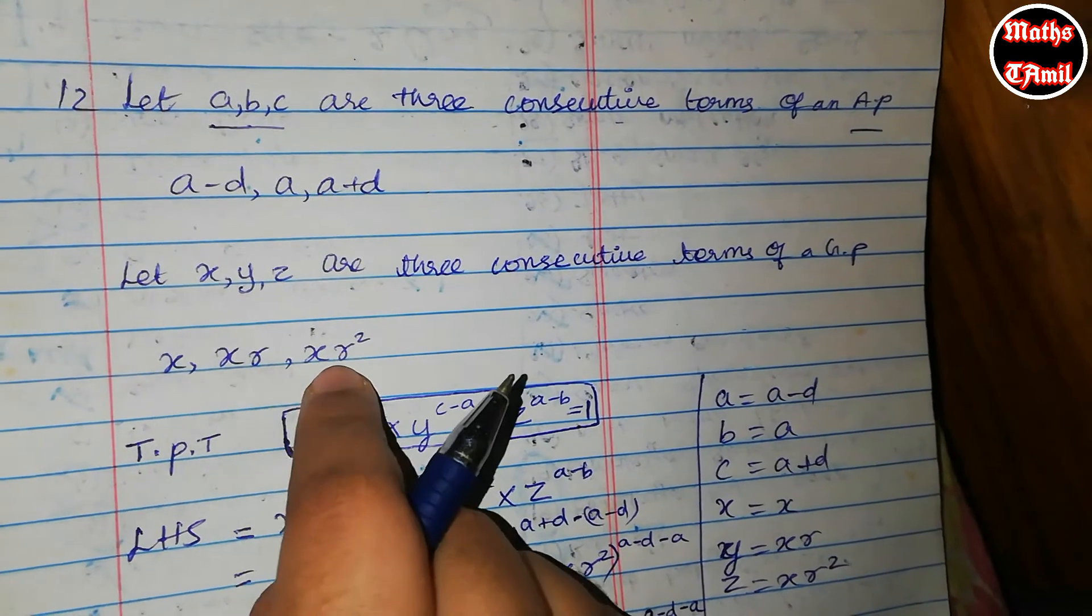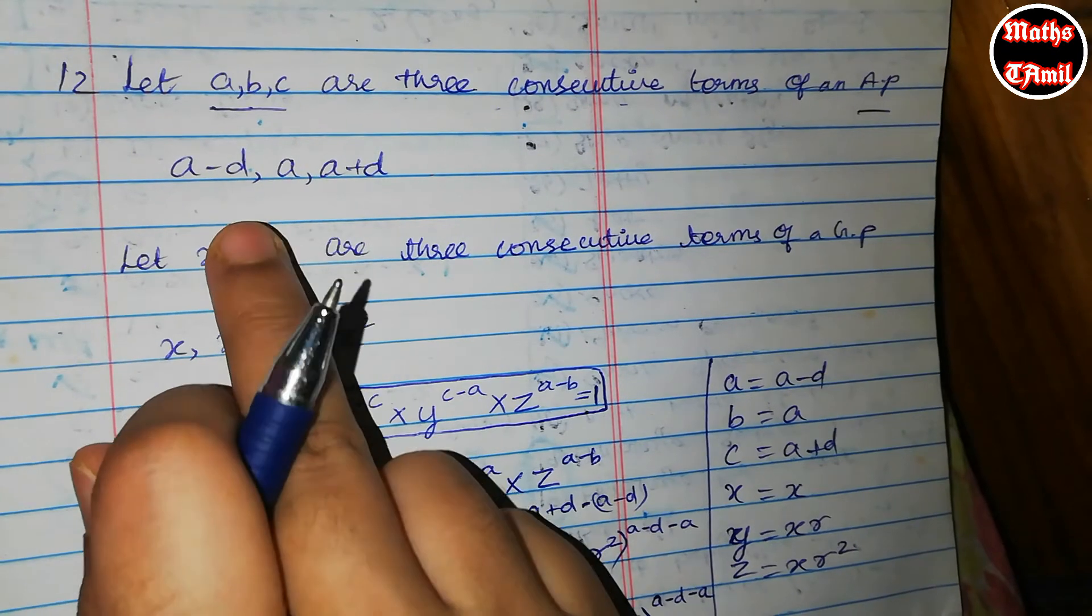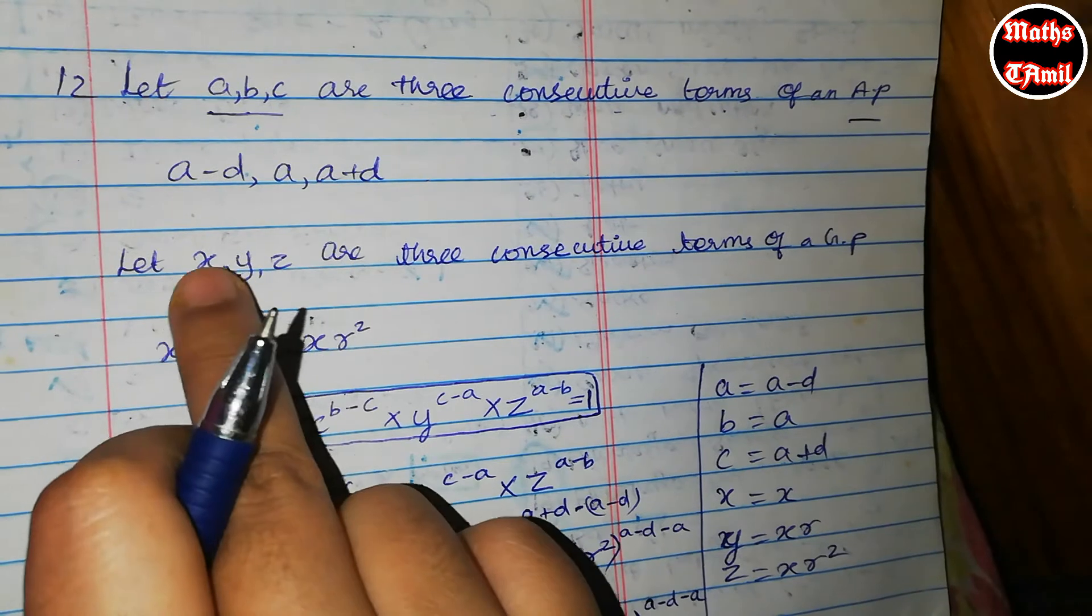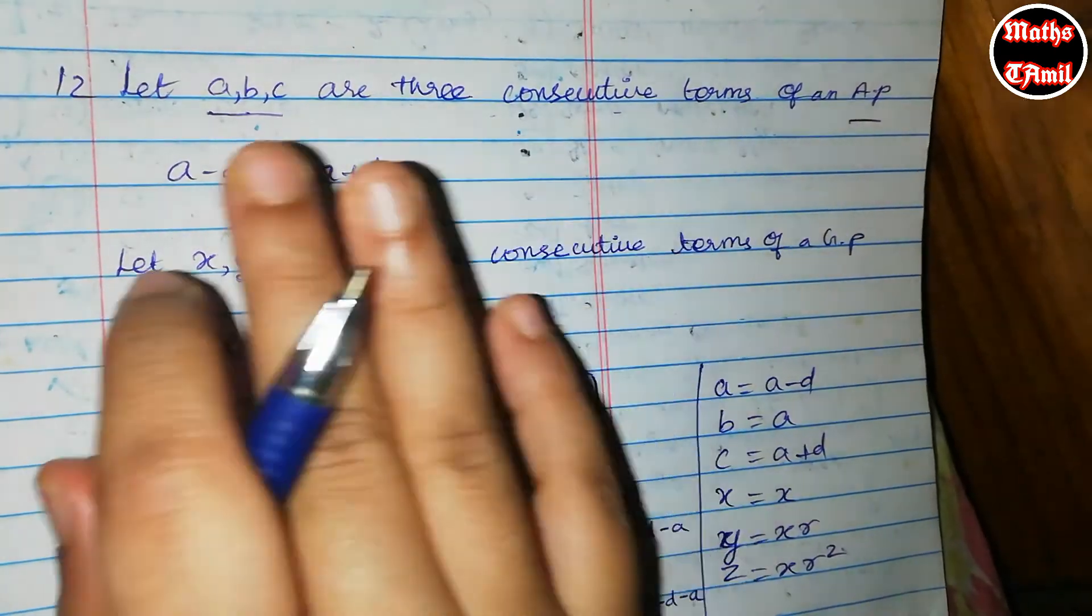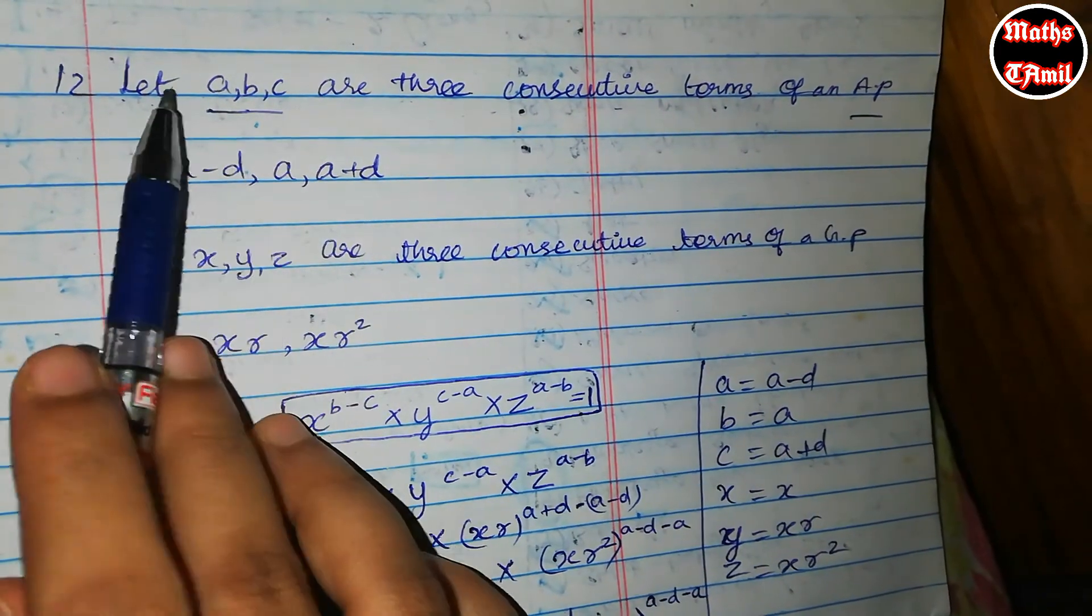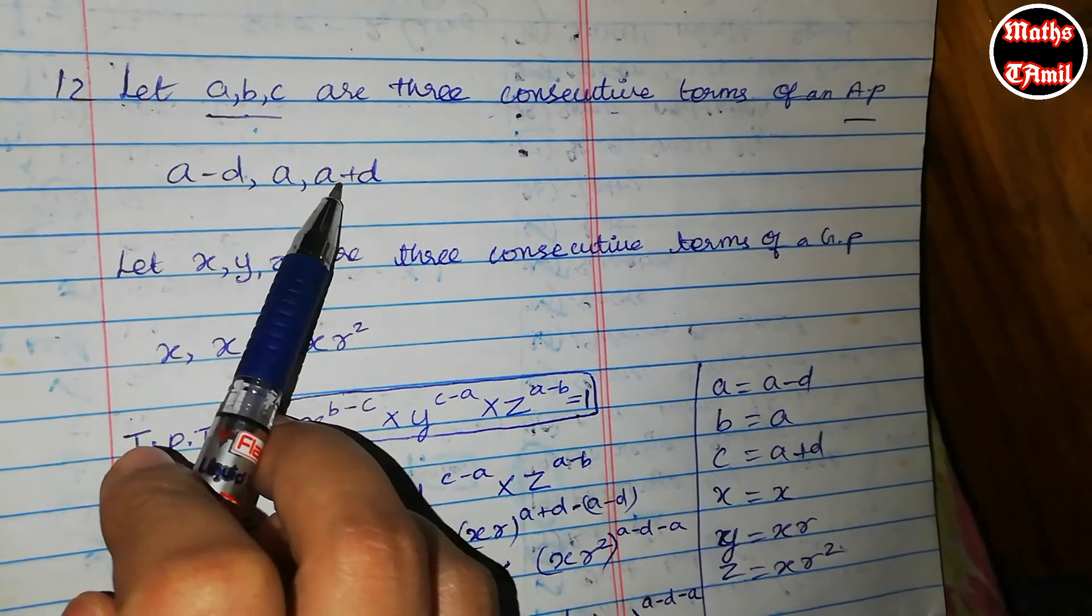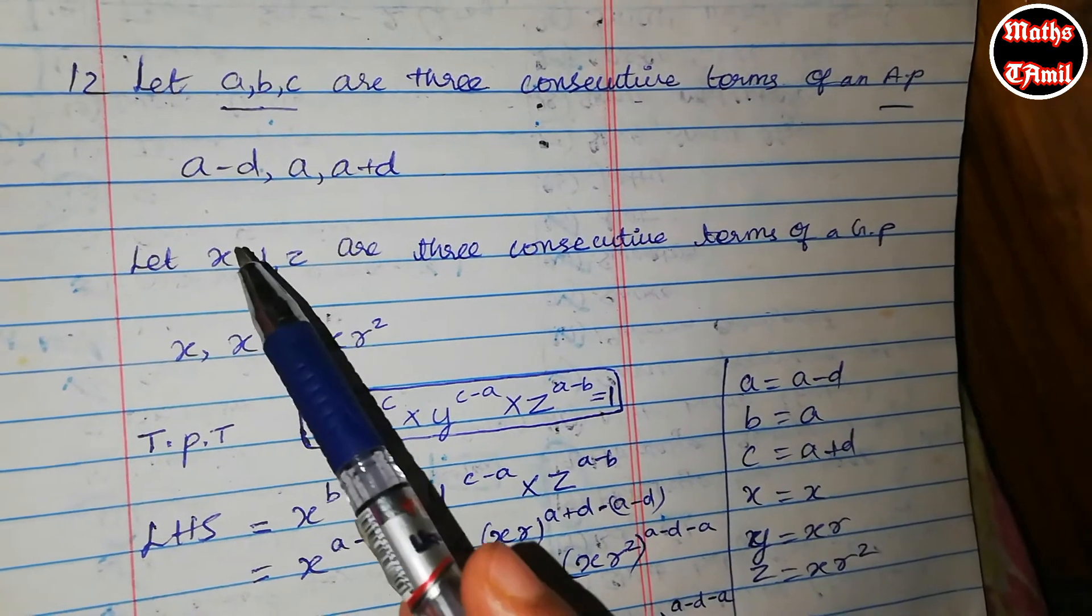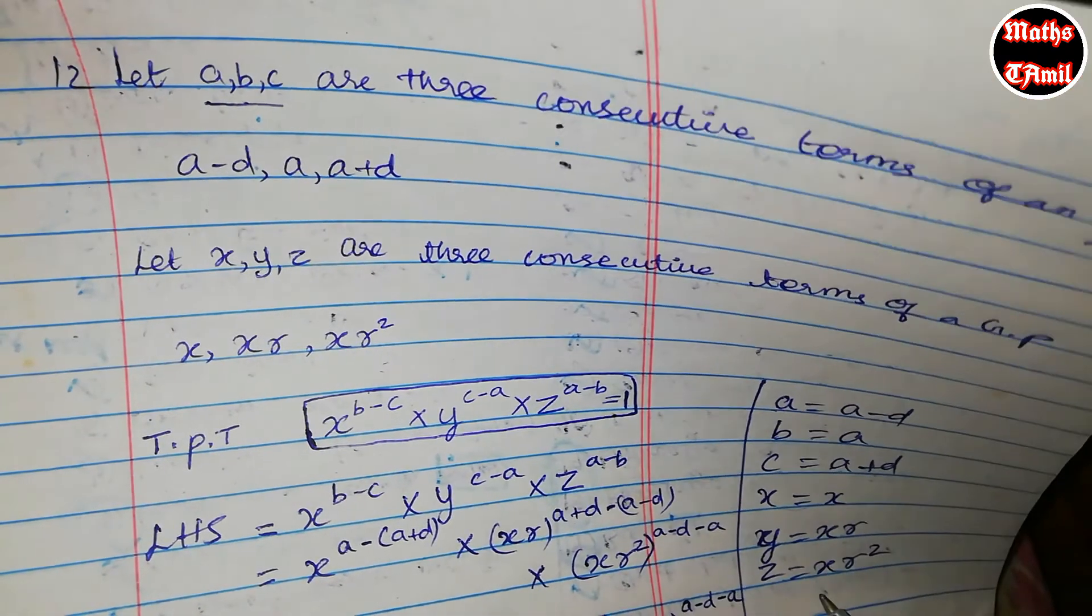Similarly, X, Y, Z are three consecutive terms of a G.P. So we can write them as X, XR, and XR squared. Now we are going to substitute these values: A becomes A minus D, B becomes A, C becomes A plus D. And X remains X, Y becomes XR, and Z becomes XR squared.